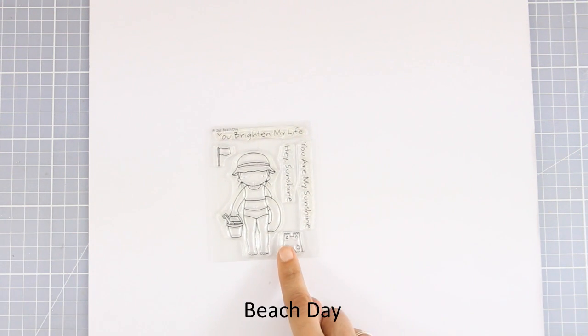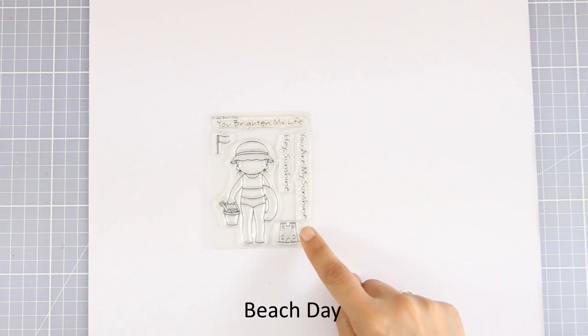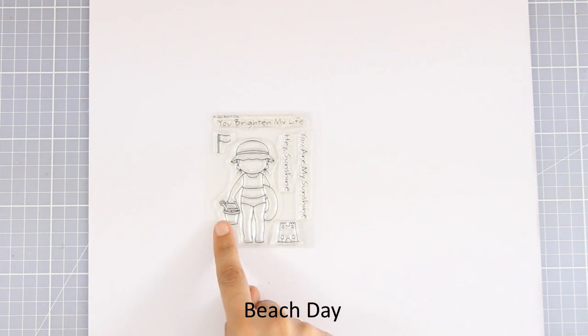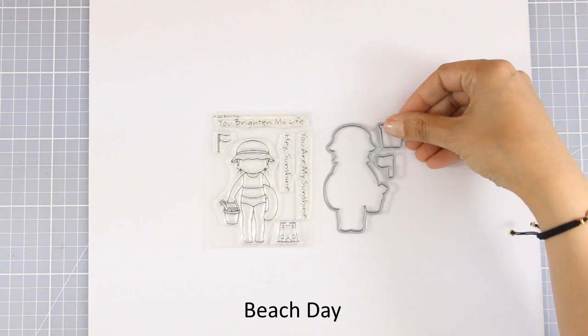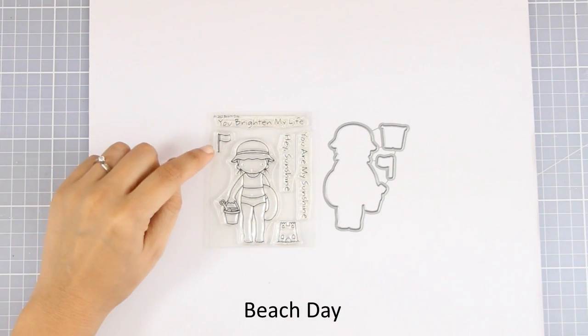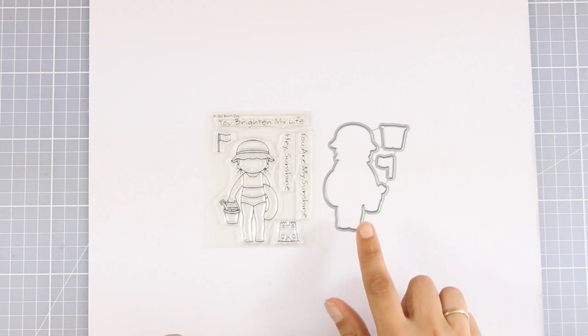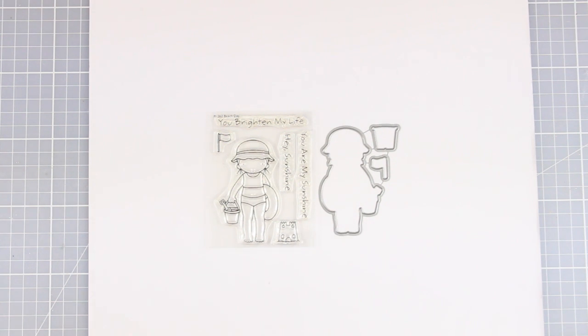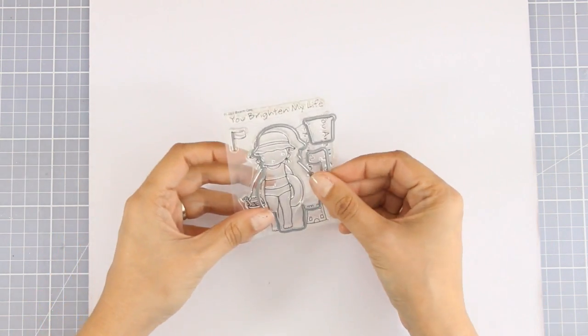And now our adorable little friend is back this month. This is a stamp set called Beach Day and this time our little girl is at the beach. As always there is a matching die and there are sentiments such as 'You are my sunshine,' 'Hey sunshine,' and 'You brighten my day.' Just adorable. I really love this collection of those little girls.